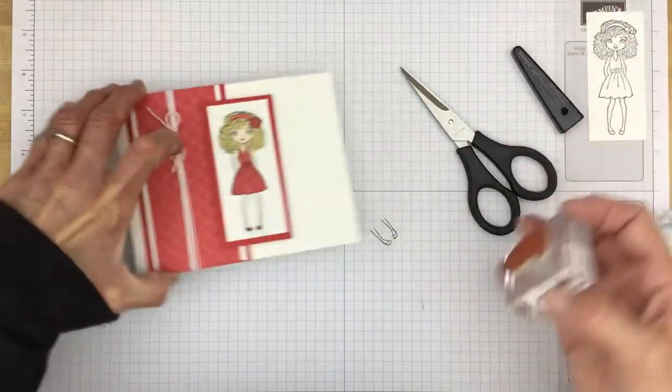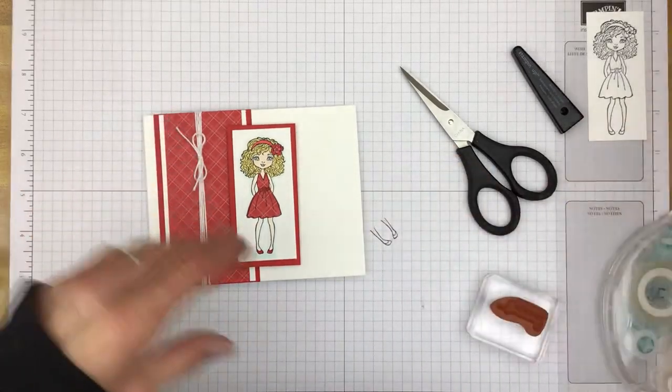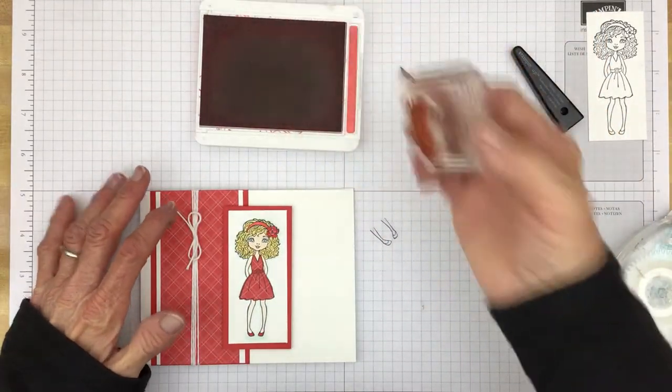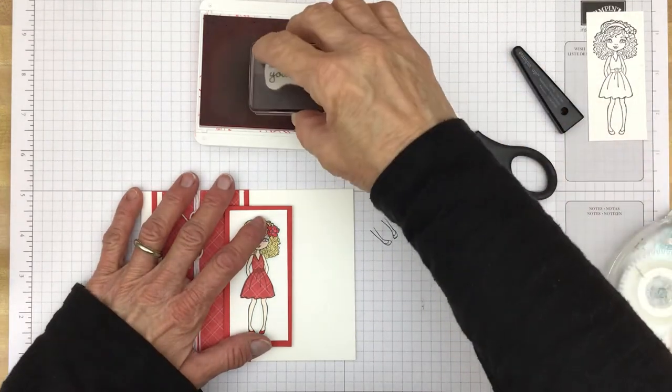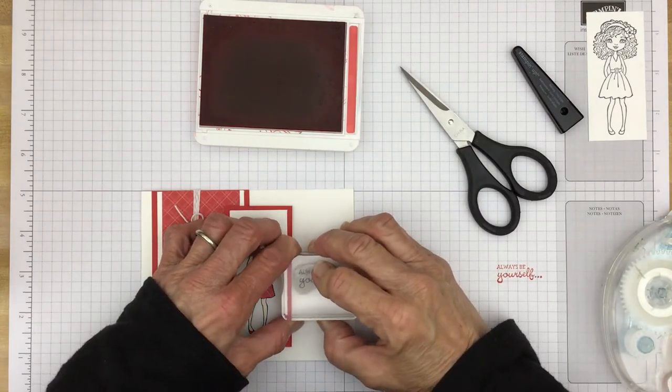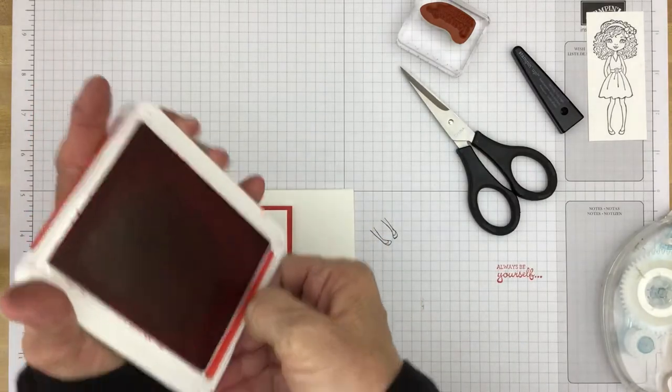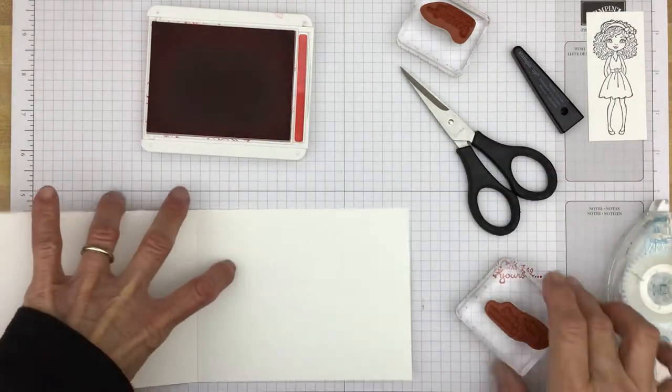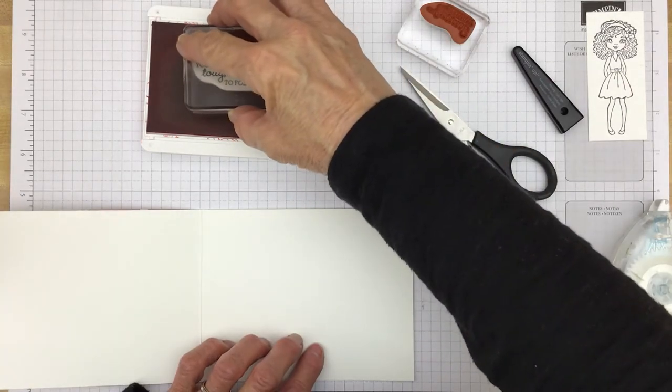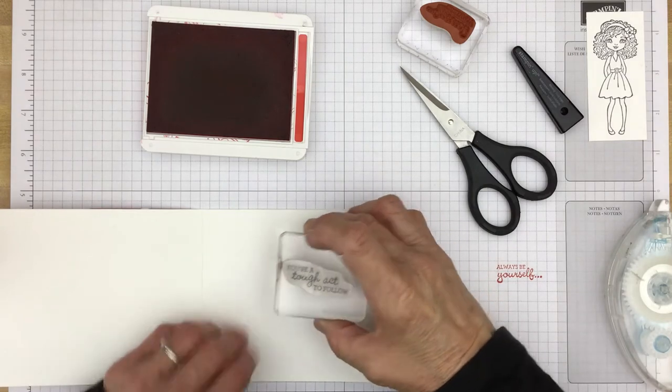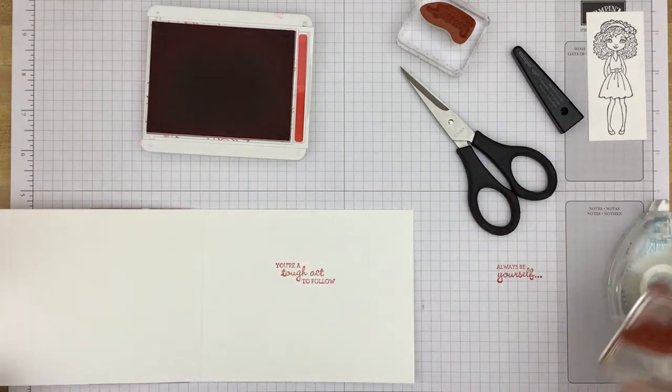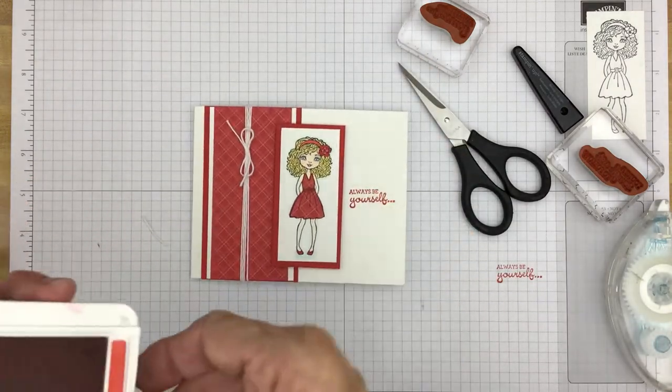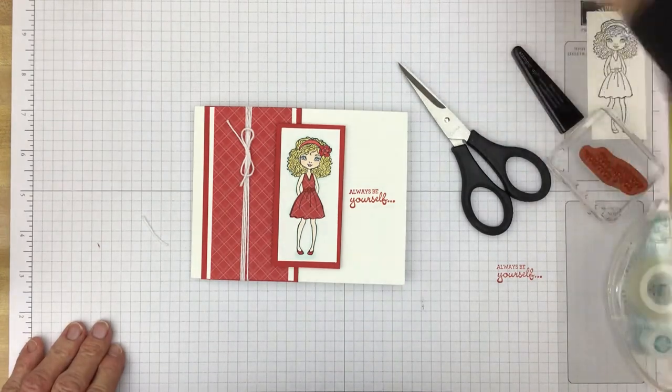And then I have a greeting that says always be yourself. We'll stamp that in some poppy parade. And then for the inside I decided since this was white we would just stamp on the card, and this is the basic white thick so it makes a really nice card base. This says you're a tough act to follow. So always be yourself, you're a tough act to follow. And there's the card, that went fairly quickly.